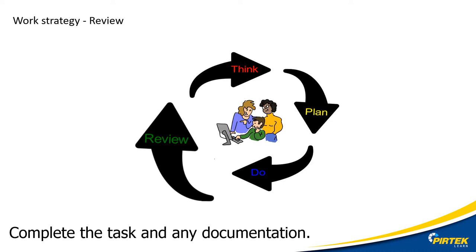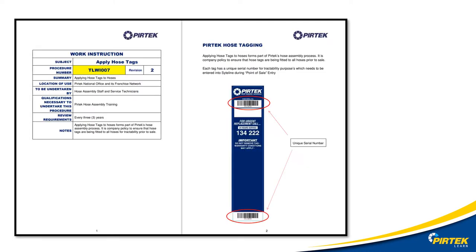Review: have I completed all the tasks as described in the work instructions? Did everything go to plan? Were there any unforeseen situations that I didn't plan for? Can I do things better next time? The 10-step hose procedure describes how I need to apply a tag to the hose. Therefore I will download and read the work instruction for applying hose tags. The apply hose tags work instruction was downloaded during the planning stage — make sure that it was available for when I needed it.